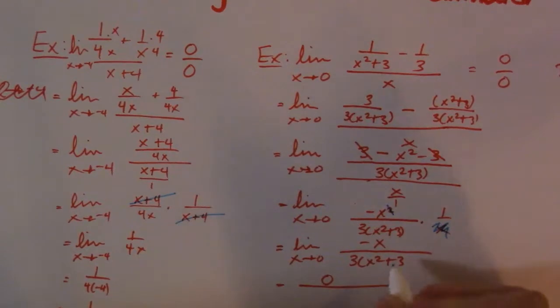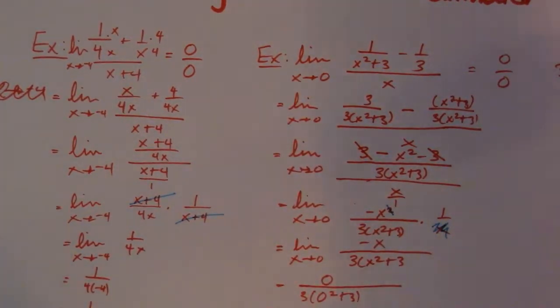so negative 0. And then 3(0² + 3). The bottom doesn't really matter. Top is 0, so therefore we have 0.